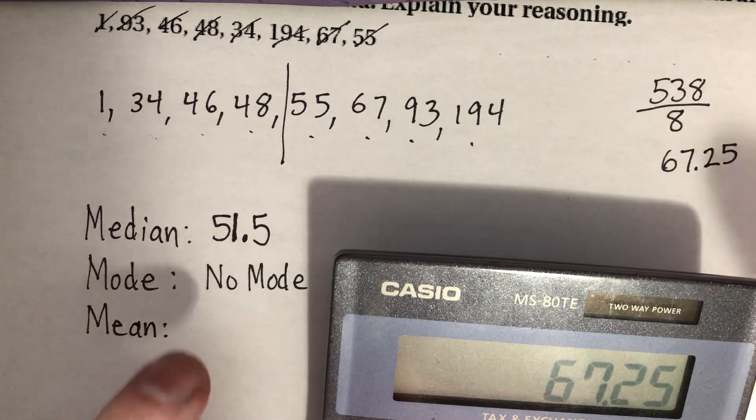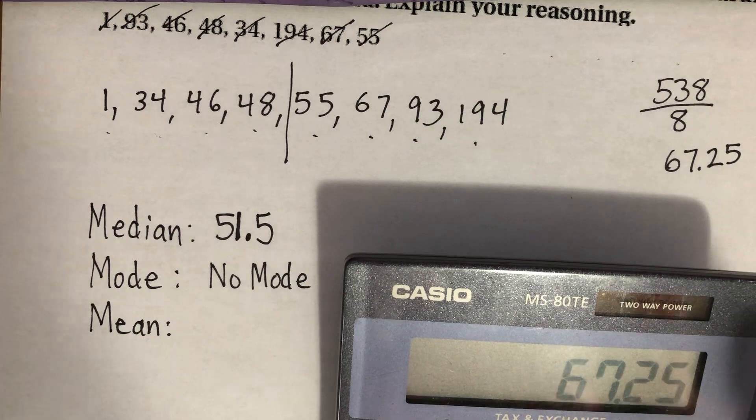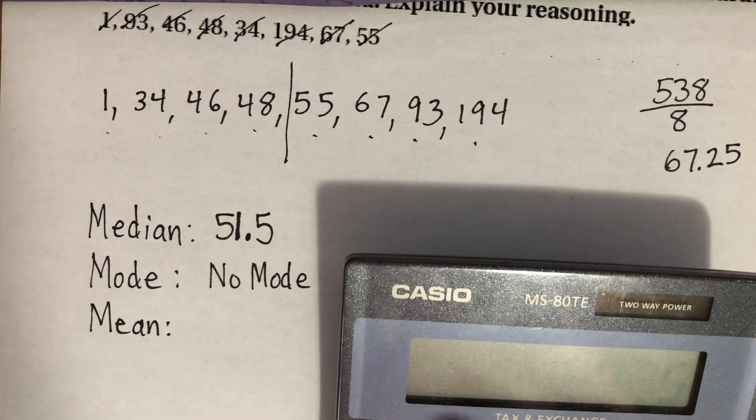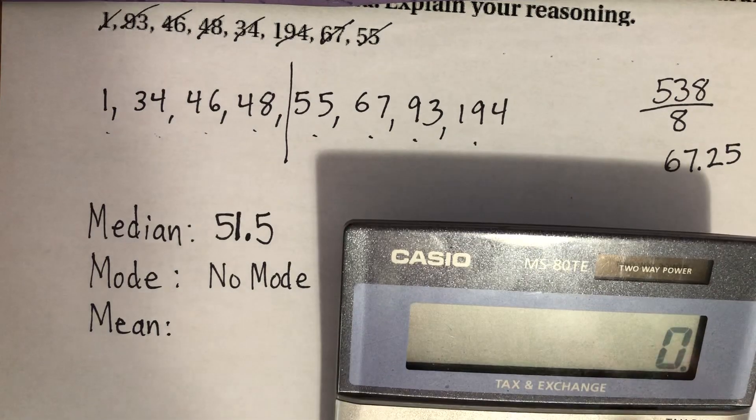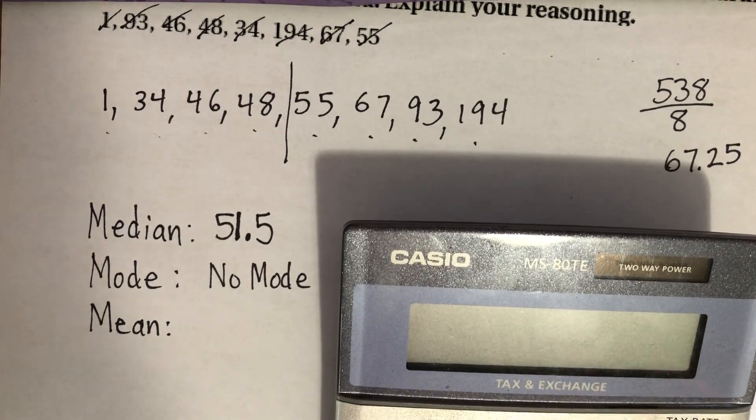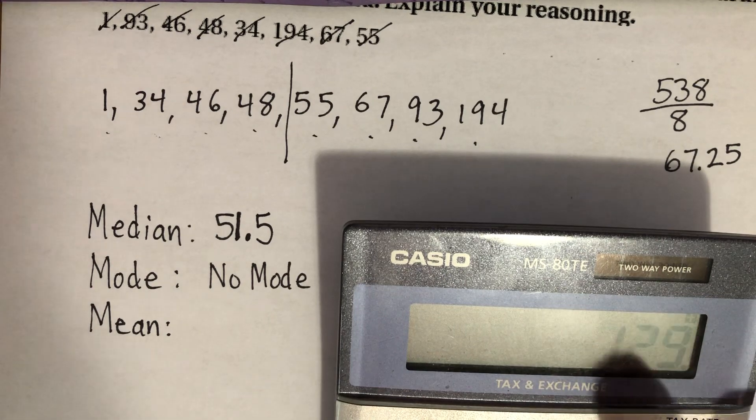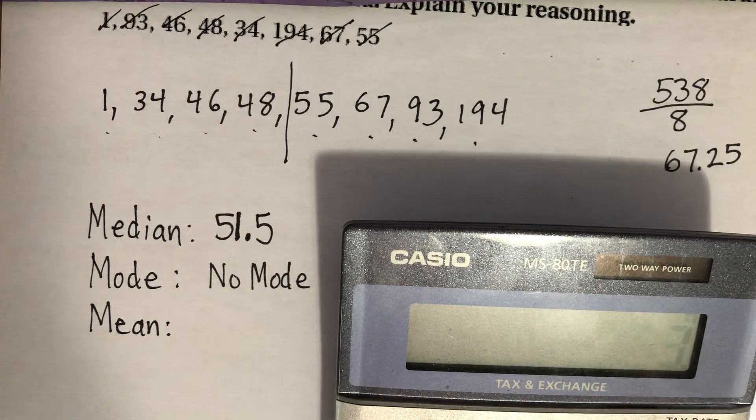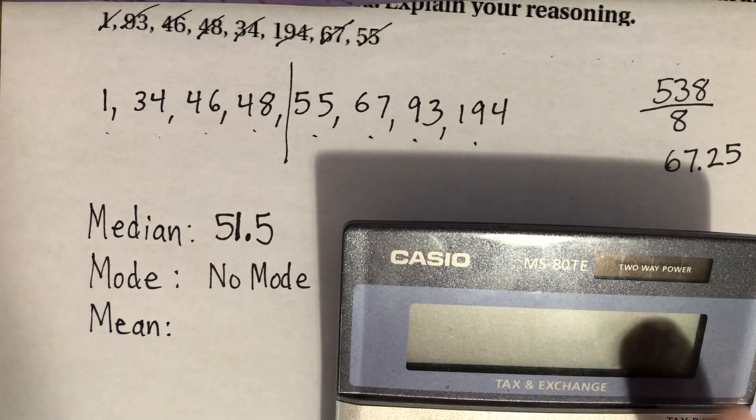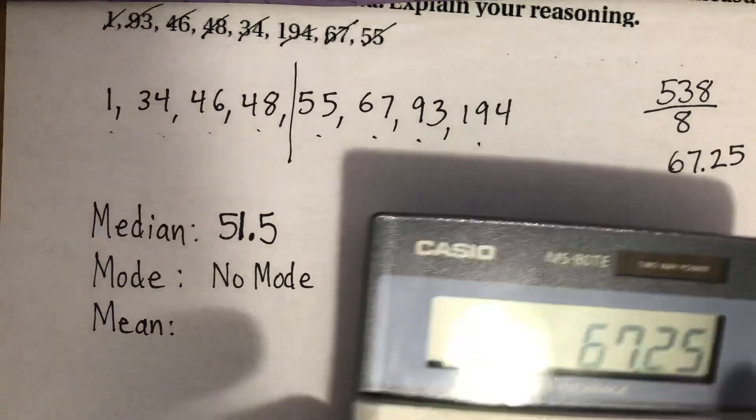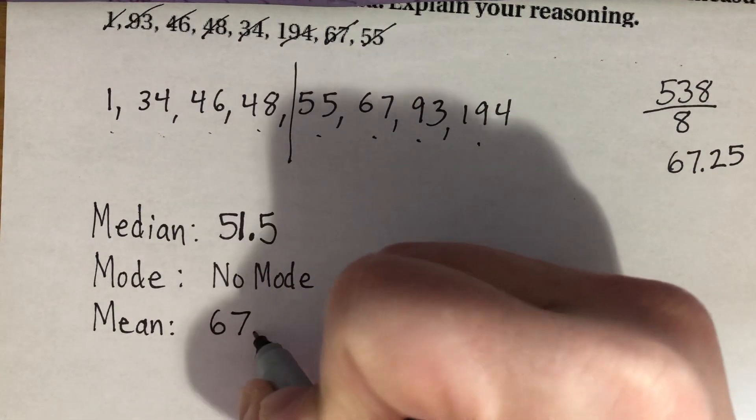You'll notice that I didn't write it over here. That's because this is a large string number. So I want to add them up a second time and divide them a second time just to be sure that I did this correctly. So 1 plus 34 plus 46 plus 48 plus 55 plus 67 plus 93 plus 194. And I did get 538 again. And so 67.25 is the correct mean.